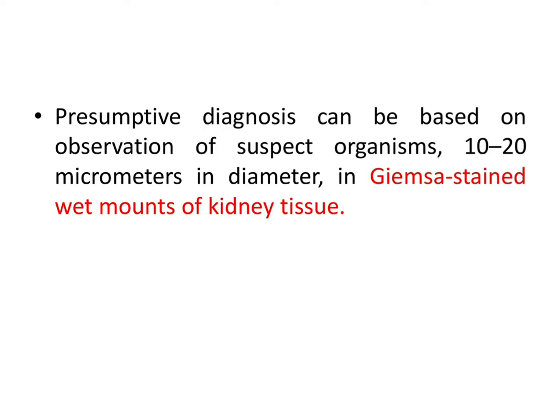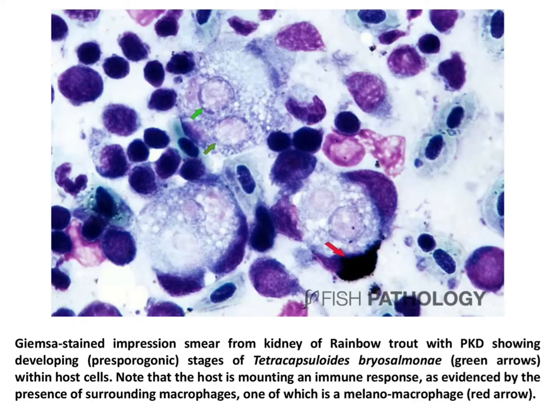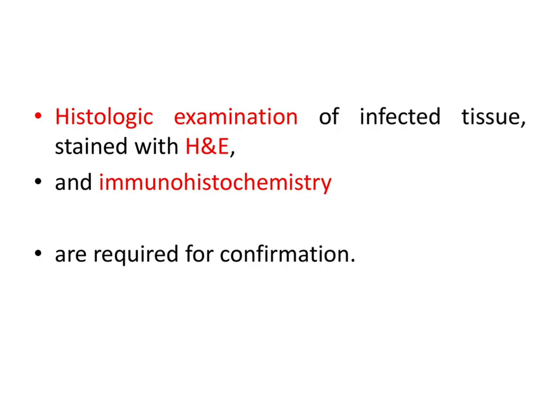Presumptive diagnosis can be based on observation of the suspected organism, 10 to 20 micrometers in diameter, in Giemsa-stained wet mounts of kidney tissue. This is a Giemsa-stained impression smear from the kidney of rainbow trout with PKD. The developing stages of the organism are shown by green arrows within the host cells, and the host is mounting an immune response evidenced by surrounding macrophages, one of which is a melanomacrophage shown by the red arrow. Histologic examination with H&E staining and immunohistochemistry are required for confirmation of PKD.